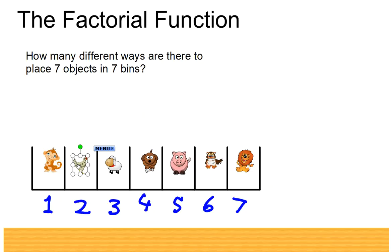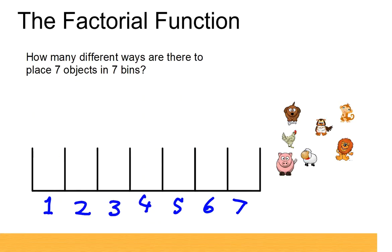The way we're going to do it is we're going to fill the bins one by one from number one to number seven, and each time count how many possibilities there are remaining—how many possibilities we have for making this choice.